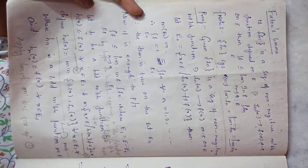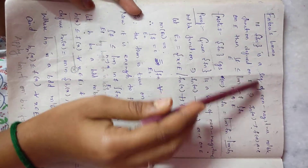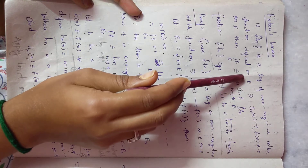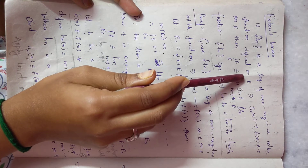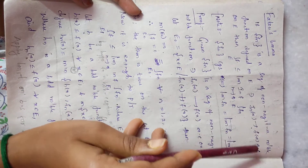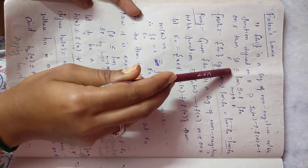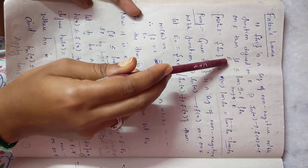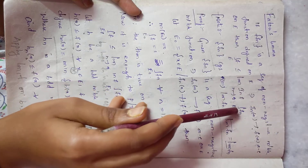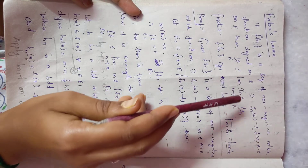Fatou's Lemma: given fₙ is a sequence of non-negative measurable functions defined on a measurable set E, and fₙ converges to f almost everywhere on E. We have to prove that the integral of f over E is less than or equal to the limit infimum of the integral of fₙ over E.